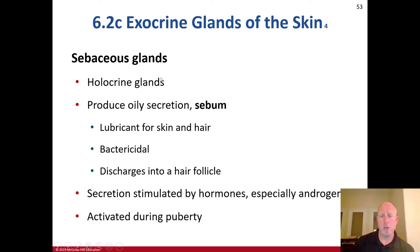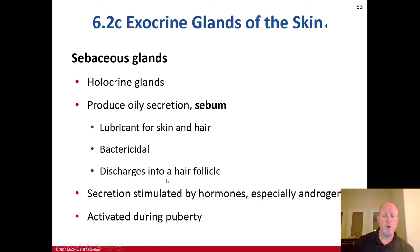Sebaceous glands are the holocrine glands — not to be confused with the sweat glands. The holocrine glands produce an oily secretion called sebum. It's a lubricant for skin and hair, and it's bactericidal. It discharges into the hair follicle, and the secretion is stimulated by hormones, especially androgens. It's activated during puberty.